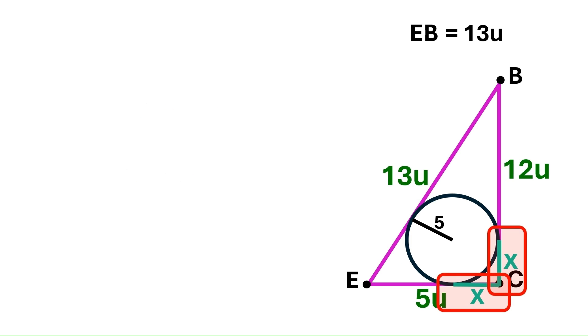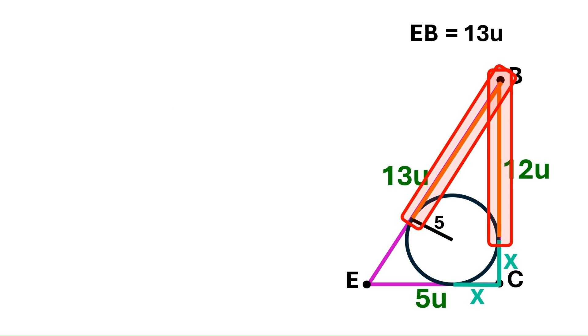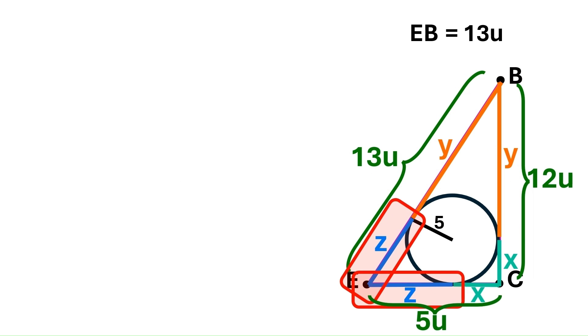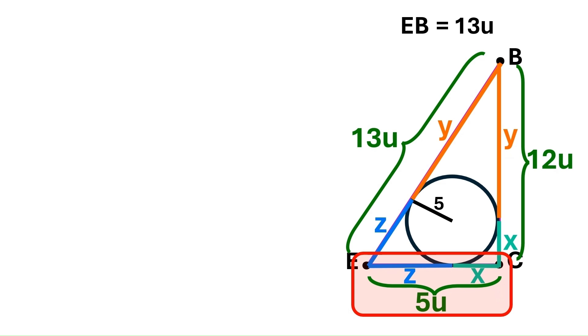So let's call them X. These two segments are equal too, for exactly the same reason, and we'll call them Y. And these two segments will be Z. Now it's pretty clear from what we see here that Z plus X equals 5U. So let's put that in an equation.